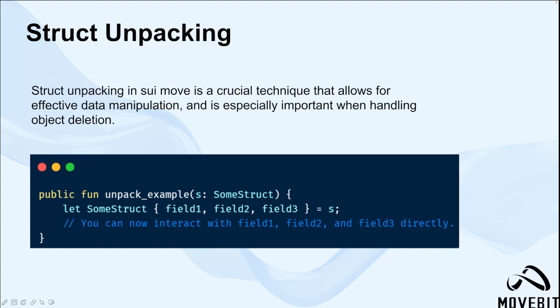In this example, SomeStruct is the struct with the fields field1, field2, and field3. Inside the unpack example function, SomeStruct is unpacked and its fields are assigned to the variables. This process of unpacking is necessary when deleting an object in Sui Move. You must first unpack the object to retrieve its ID, which can then be used to delete the object from the system.